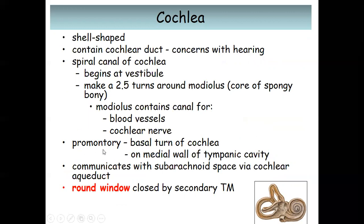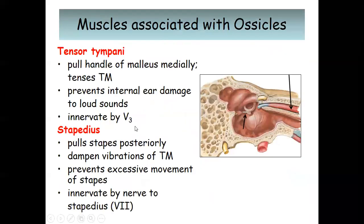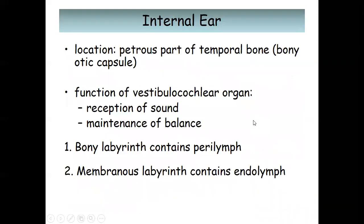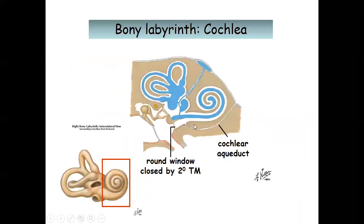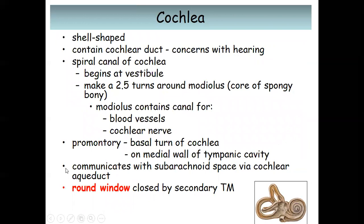The promontory is the vestibule of the cochlea visible on the medial wall of the middle ear, representing the initial turn of the cochlea. The cochlea communicates with the subarachnoid space via the cochlear aqueduct. The bony spiral and the cochlear aqueduct can be seen in the image. The round window is closed by the secondary tympanic membrane.